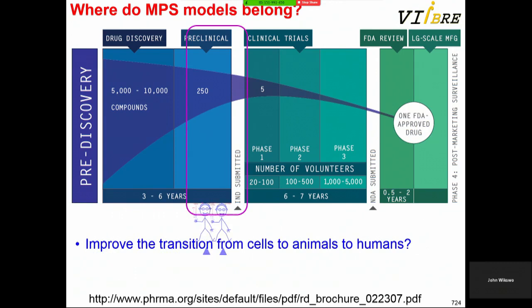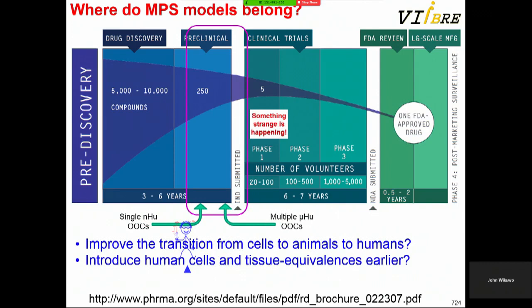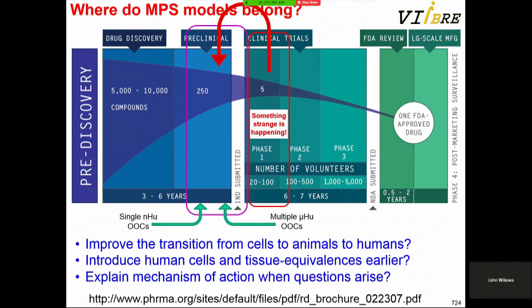Where you put organs on chips in the drug development pipeline: early, single nanohumans go in the preclinical stage. Later, multiple microhuman organs on a chip come in. Most importantly, if you're in phase one with a family of drugs and see something strange happening, you can take that family back for a high-content analysis, essentially revisiting the preclinical stage. Everyone understands where animals fit, and organs on a chip fit in a couple of different ways.